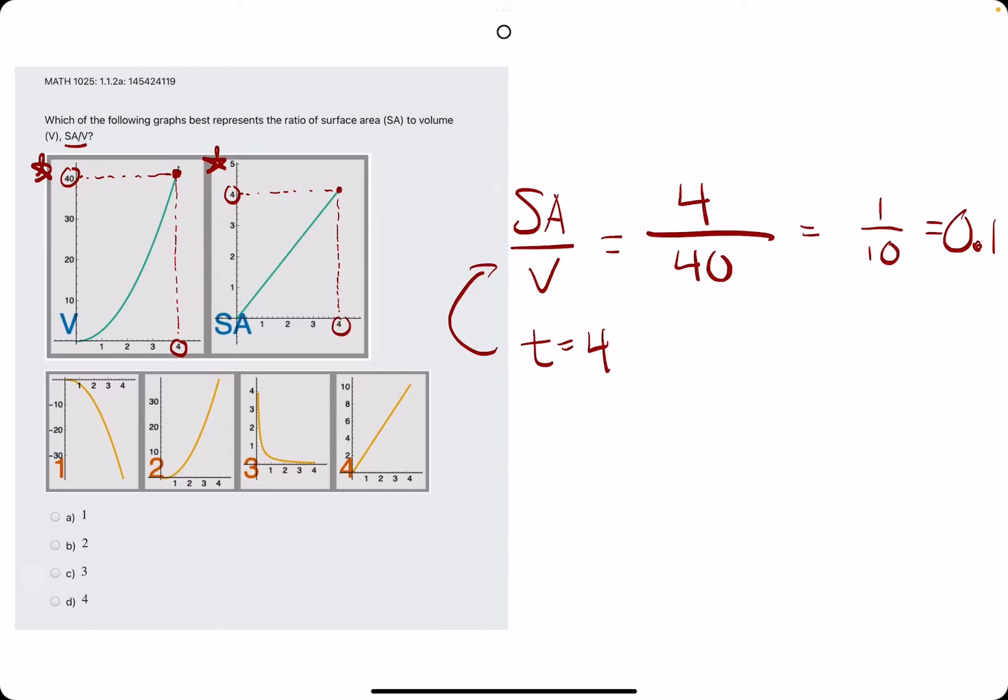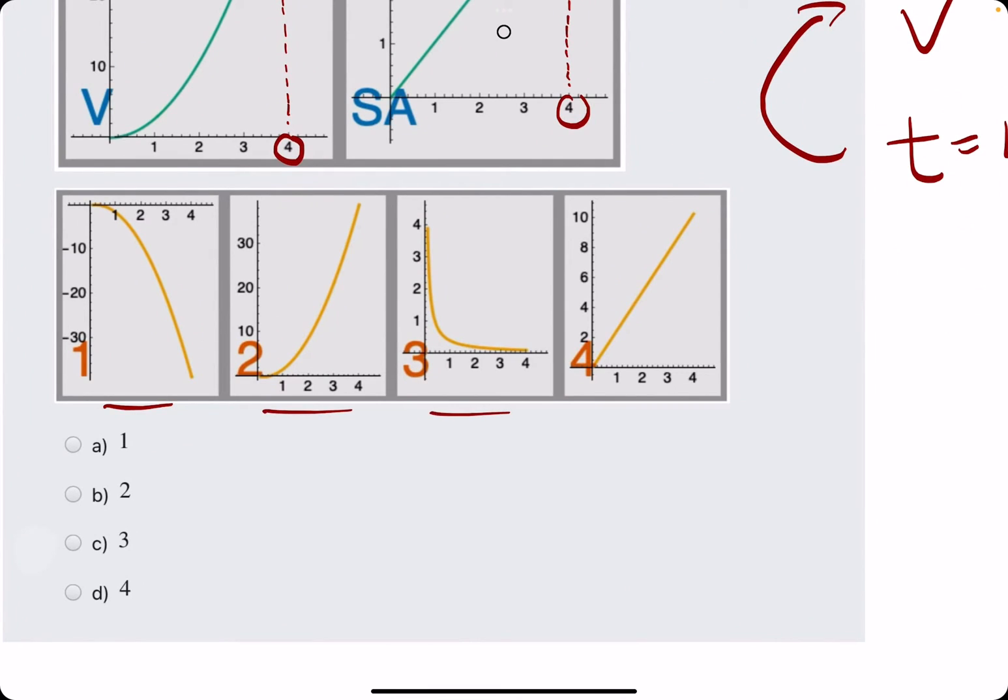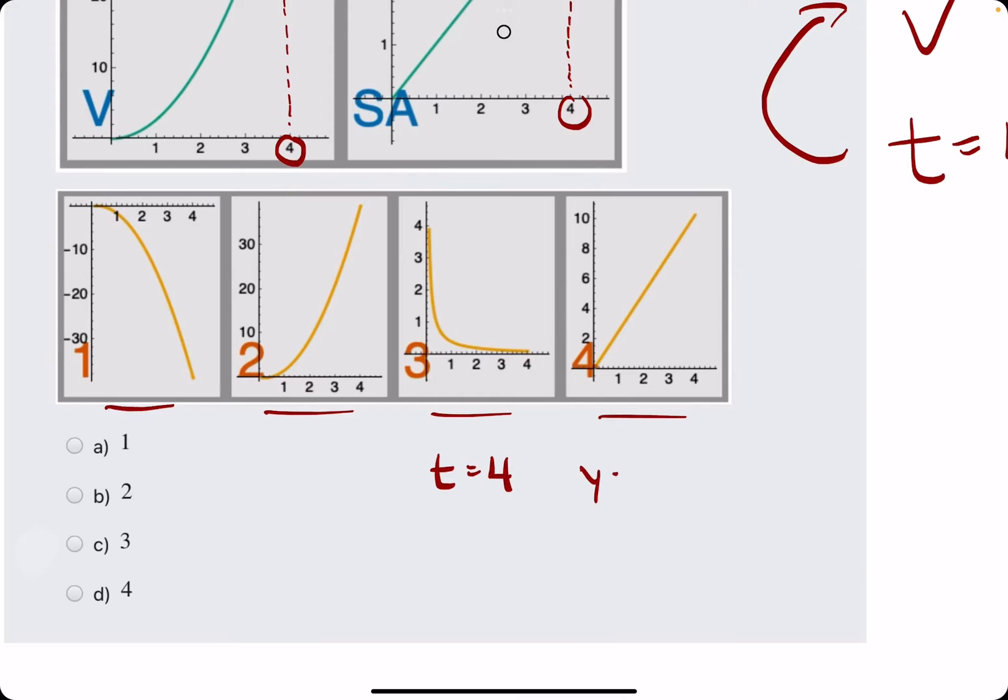So 0.1 is the surface area to volume ratio at time 4. What does that mean? On whatever the correct graph is down here, at time 4, we should have a value, basically a Y value, of 0.1.